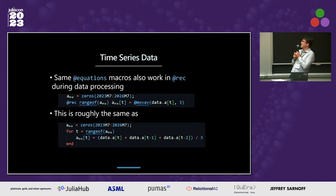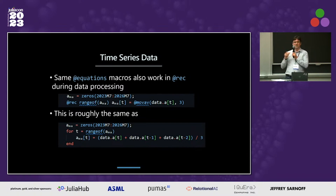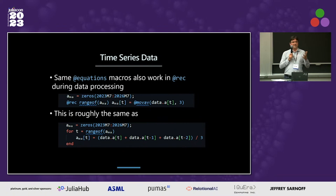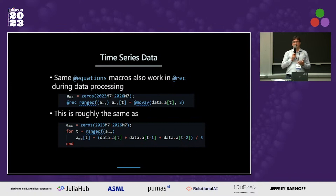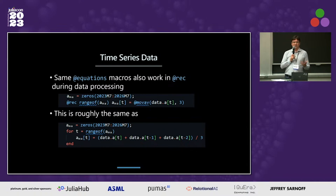The last example shows how we can use the same macros for time series operations that we saw in the equations block, but this time outside of a model to process data directly. This is a simple example with moving average. We can write a for loop that does the same thing, but the macro won't work inside a for loop, so we have to spell out the formula explicitly ourselves.